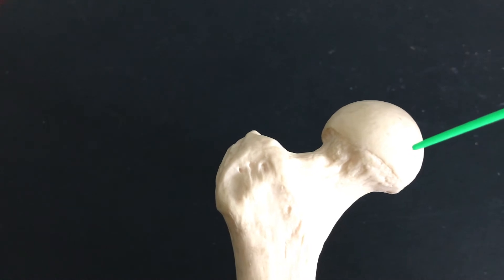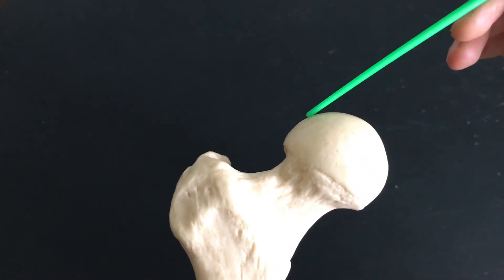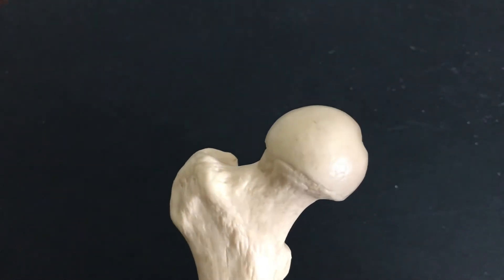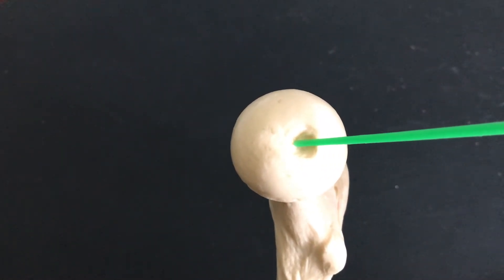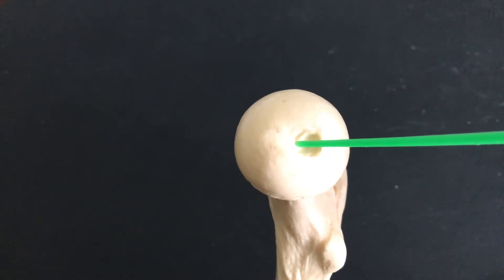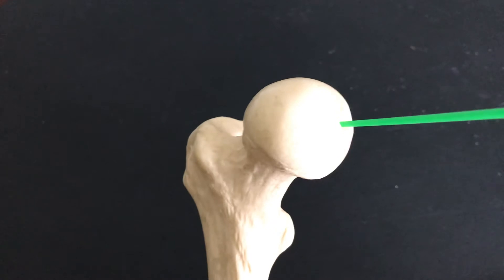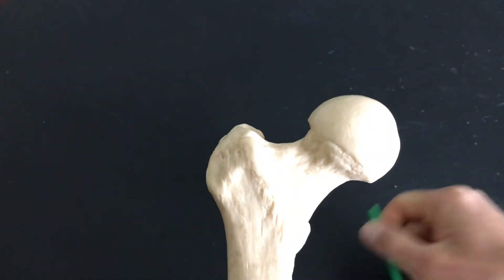At the proximal end of the femur, we have, again, the head. The head is what fits into the acetabulum of the hips. If you look very closely inside here, we have something called the fovea capitis. There's actually a little ligament that comes out of this and attaches to the inside of the acetabulum to help ensure that ball and socket joint works the way that it's supposed to.